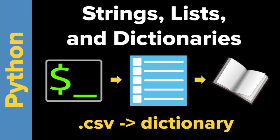Welcome everybody to strings, lists and dictionaries. In this video I'm going to show you how to convert from a .CSV file to a dictionary, and in the process learn about how strings work, how to split strings into lists, and how we can take lists and use those indices to create dictionary key and value pairs.